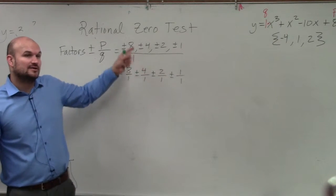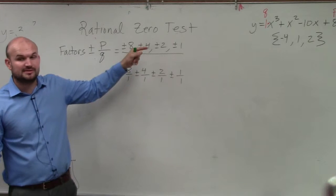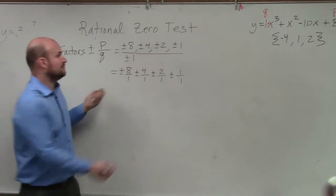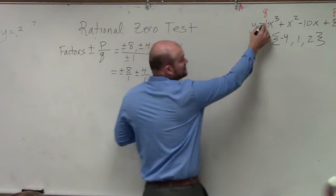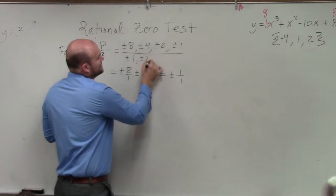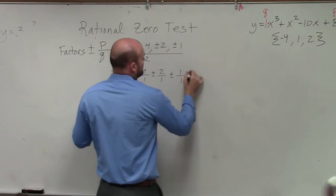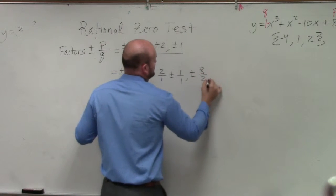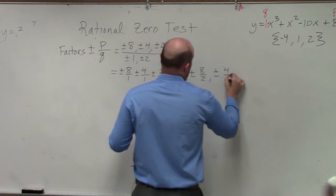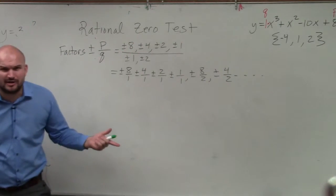If you had more than one denominator, you'd have to do it for both denominators, OK? So for instance, let's say this was 2, and you had plus or minus 2. Then I'd have to do plus or minus 8 over 2, plus or minus 4 over 2. Does everybody see the pattern that I'm kind of creating?